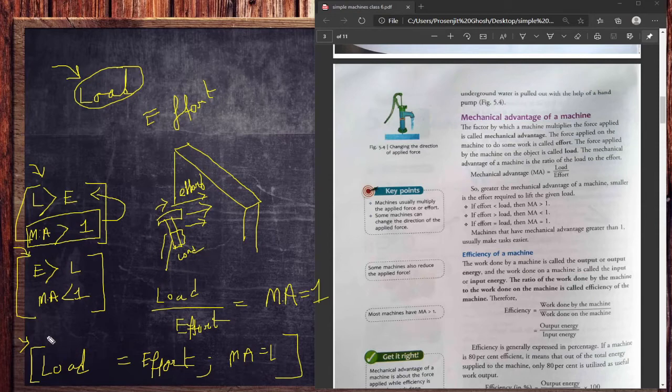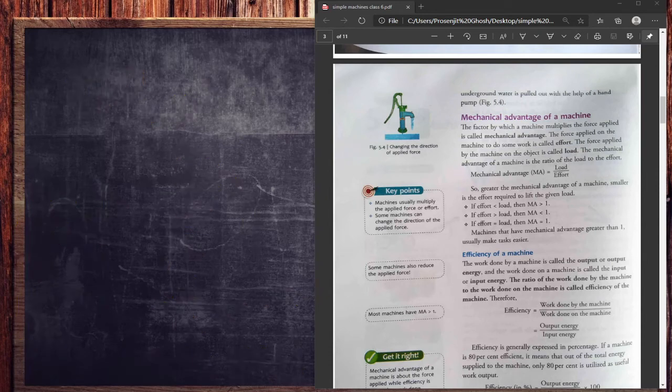And I told you one more thing: for an ideal machine, load must be equal to effort, or mechanical advantage must be equal to 1. So these are very important concepts. Please note it down. Coming to the next topic, that is efficiency.